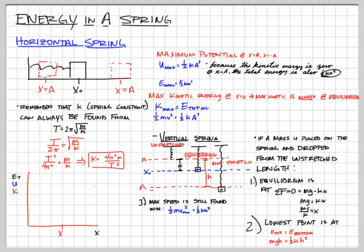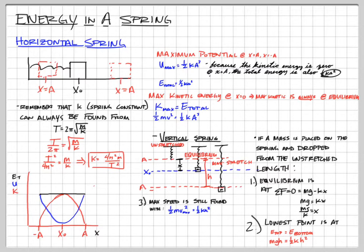Let's look quickly at an energy graph. We have our amplitudes. The kinetic energy is zero at the amplitudes since we're not moving there, and maximum when we're at x = 0. So kinetic energy starts at zero, gets higher, then lower again as we move between the amplitudes. The potential energy is the opposite — maximum at the amplitudes where we have maximum stretch, and zero at equilibrium. The total energy is the flat line on top; total energy is always the same — that's conservation of energy.